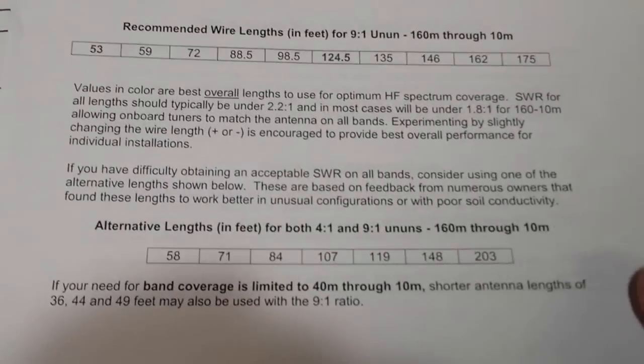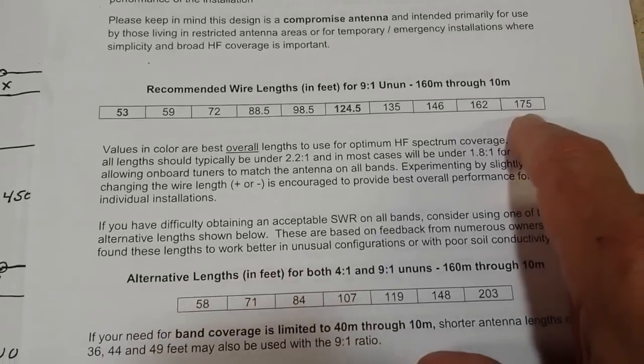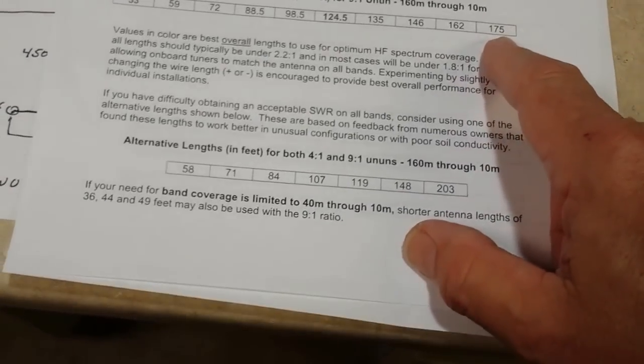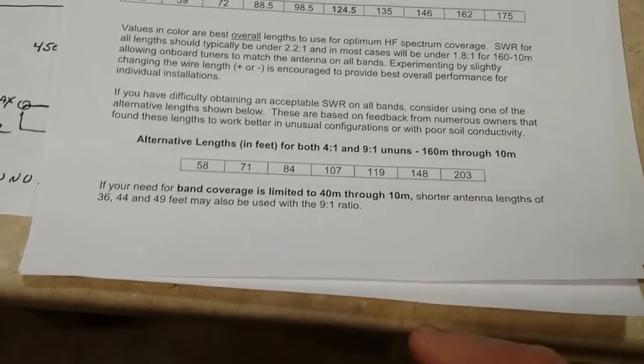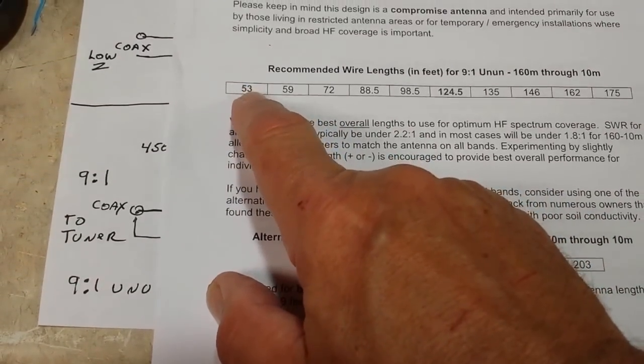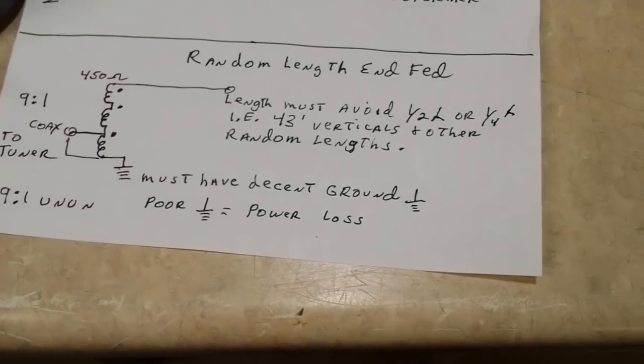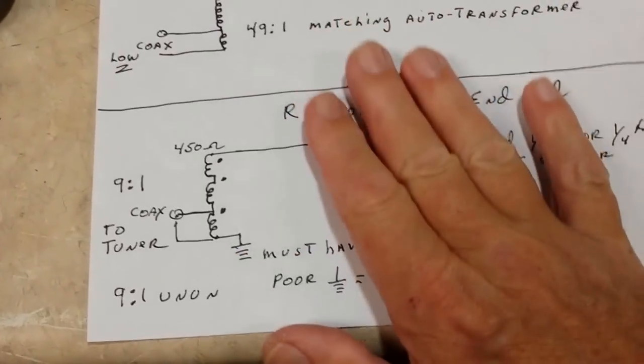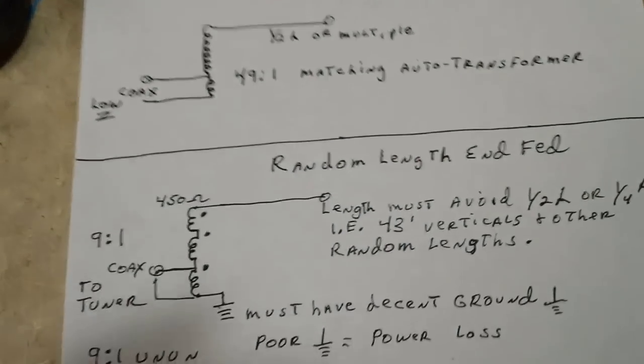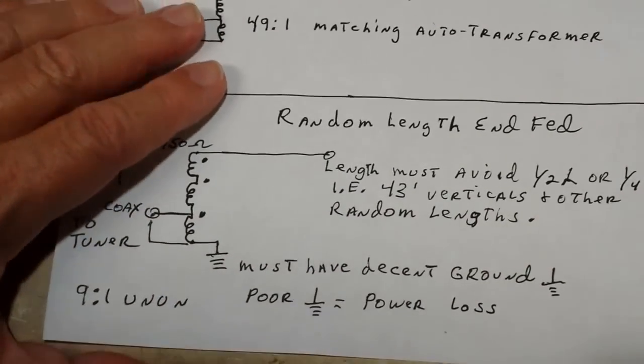This came from Balun Design and here's some recommended lengths. 53 all the way up to 175 feet. These things are advertised to cover anywhere from 160 through 10 meters. Here's some alternative lengths. But anyway, 53 feet on 160 meters. And now you say, how does that work? Well, it doesn't work all that good. I've tried it. But you can make contacts with these things. And if you have a decent ground system, it'll work very well, especially the 43-foot vertical I've found does work quite well.